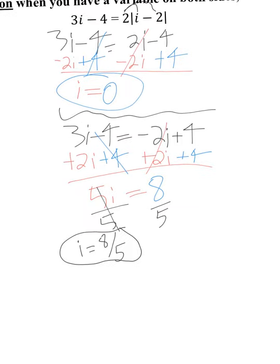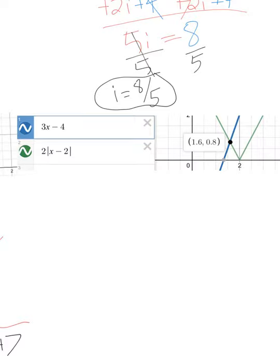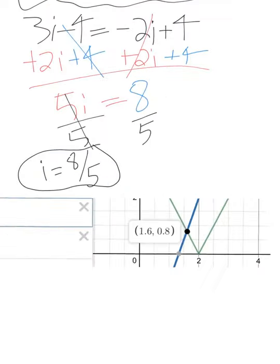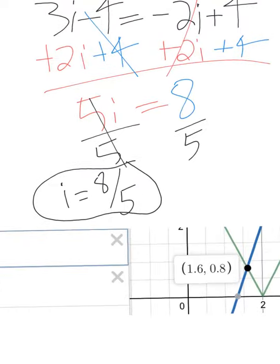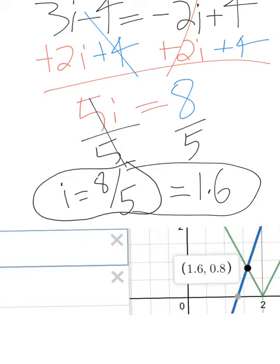Let's look at the graph first to see which one is extraneous. The graph intersects at 1.6. If you do 8 over 5 as a decimal, that is 1.6. It's definitely not at 0, so that means 8 over 5 is the true answer, and 0 is going to be the extraneous one.